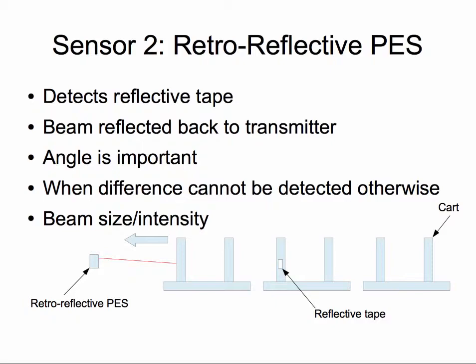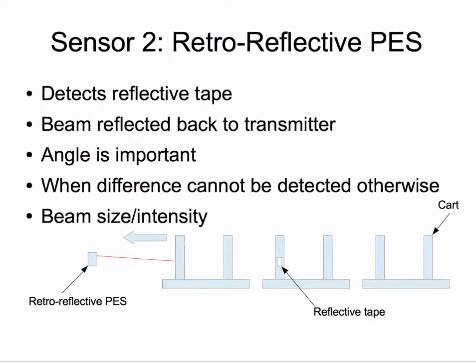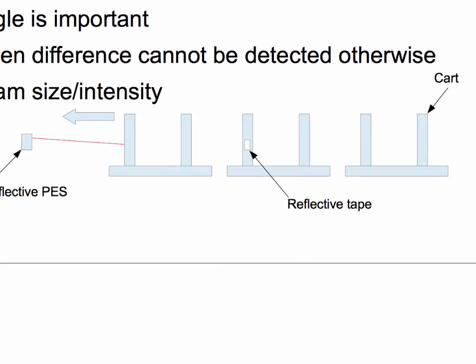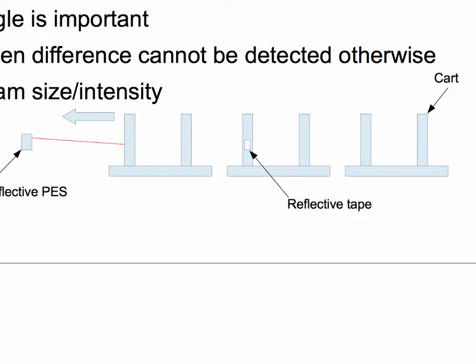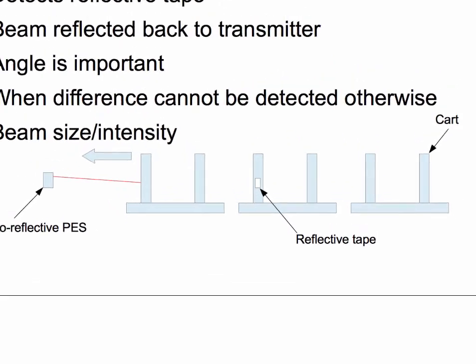I have used these sensors whenever the difference between the two different carriers or cards were not physically apparent. If they are, then I have used a laser distance sensor that we will cover next. For example, if one card has been damaged and needs to be removed by the system, that card will be marked with a reflective tape. The system is programmed to send the card to a different path when the retro-reflective sensor detects a reflective tape.